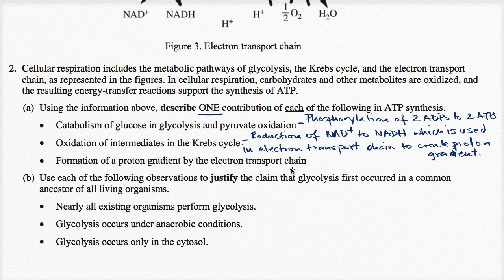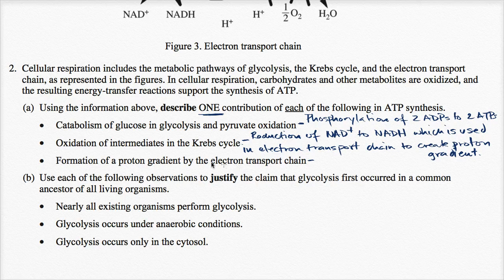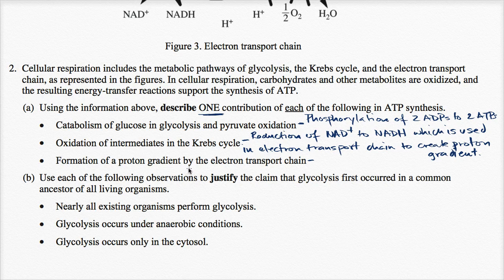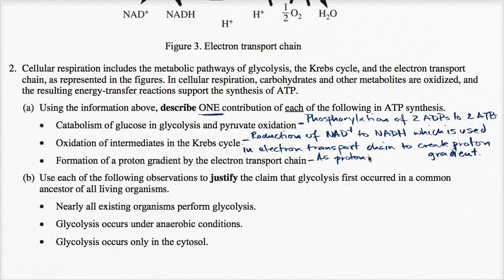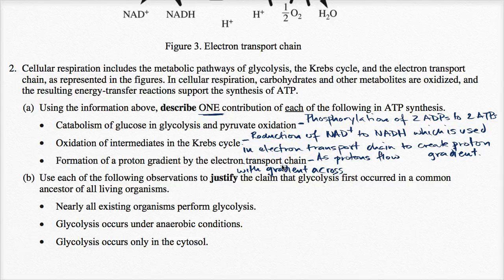Formation of a proton gradient by the electron transport chain. Well, as the protons flow with the gradient back across the membrane, they power ATP synthase, which creates ATP from ADP. So as protons flow with gradient across membrane.